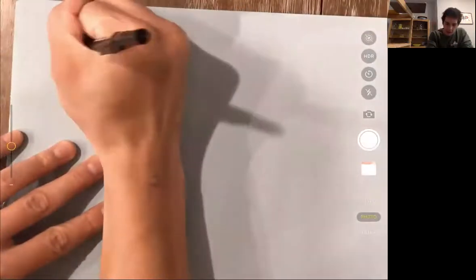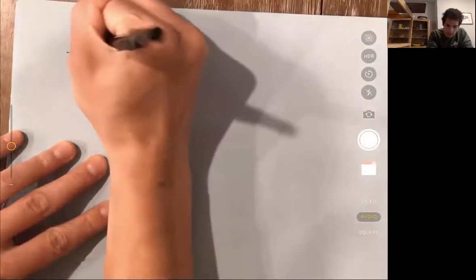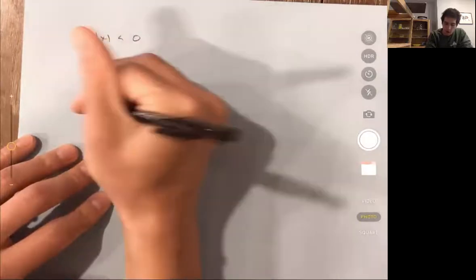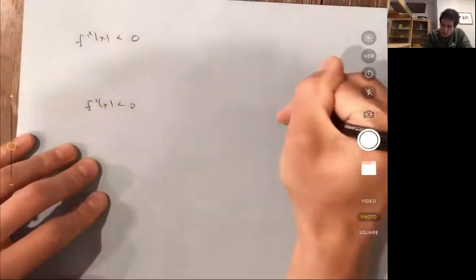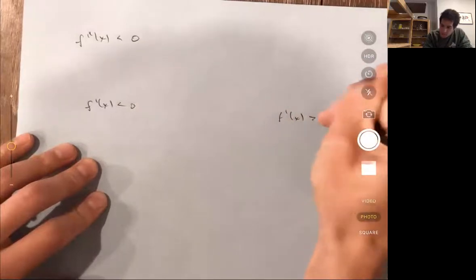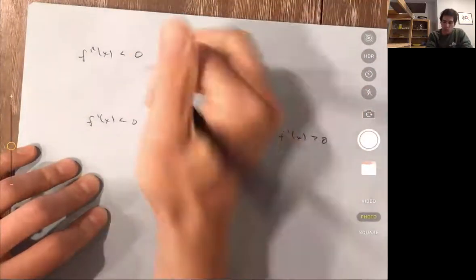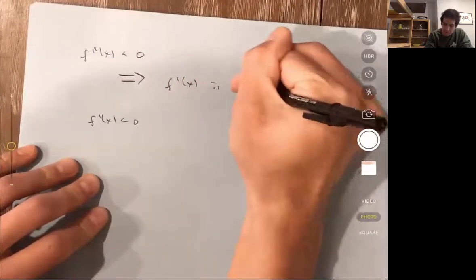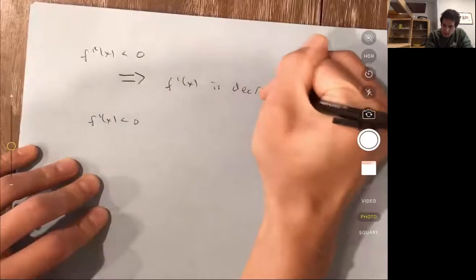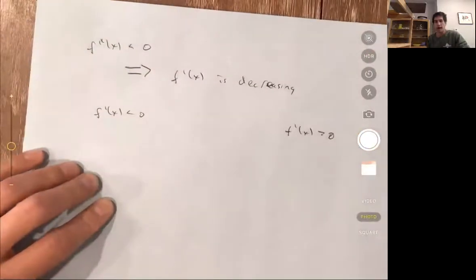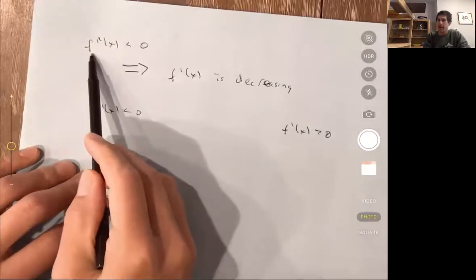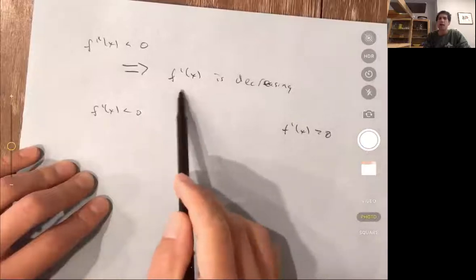Now let's do what happens when the second derivative is negative. So here f double prime of x is less than 0. Again, let's split into two cases: one where f prime of x is less than 0, and one where f prime of x is greater than 0. f double prime of x less than 0 implies that f prime of x is decreasing — the slope of the tangent line to f prime is negative, meaning f prime of x is decreasing.